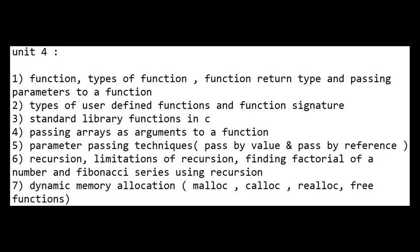Sixth question is recursion — limitations of recursion and how to find factorial and Fibonacci series using recursion. Seventh question is dynamic memory allocation. There are four functions in dynamic memory allocation: malloc, calloc, realloc, and free.